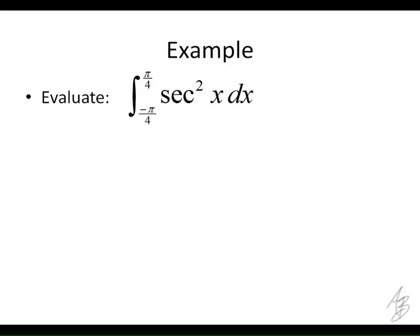Last one then. This one looks fun, doesn't it? Anybody know what the antiderivative of secant squared is? Is it secant to the 3rd divided by 3? No, because then we'd have chain rule problems there, right? What do we take the derivative of to get secant squared?